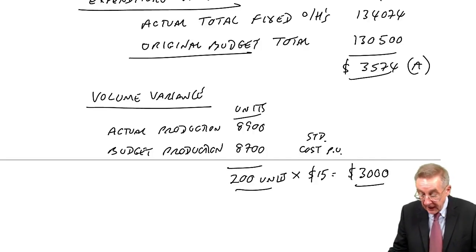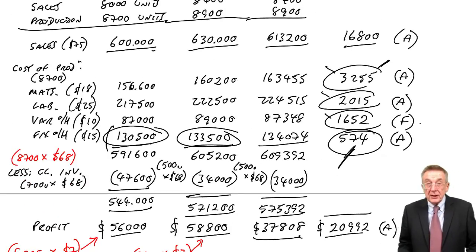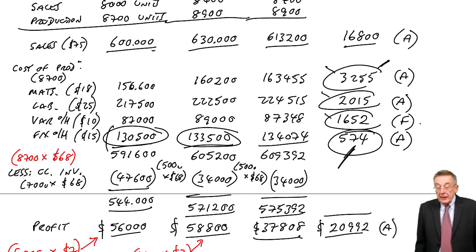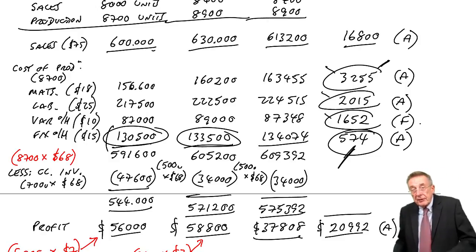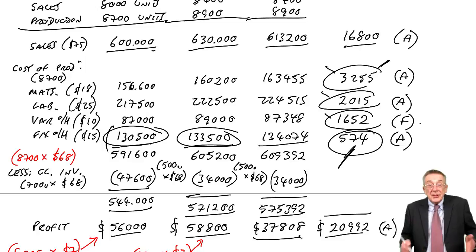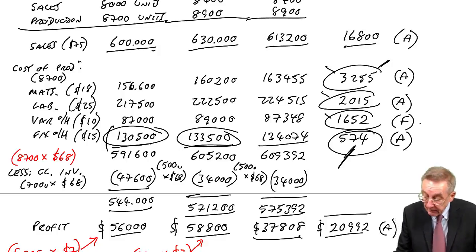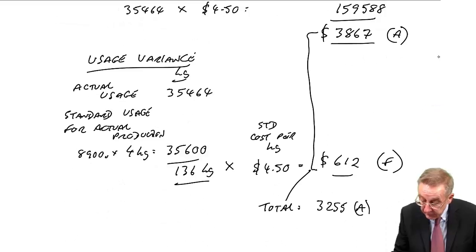And just look back, sorry going up and down again, but look back. That's exactly what had happened. By absorbing 15 for every unit produced, we've ended up charging 3,000 too much. The real profit, we should have charged less and therefore had more profit. This is favourable.